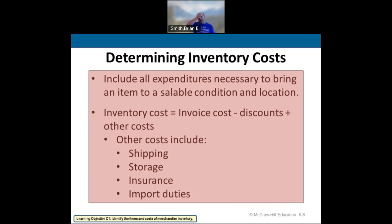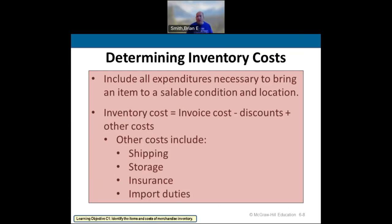For example, if you were to buy parts for a bicycle — as a manufacturer, not a merchandiser — the cost it took to build that bicycle would also be inventory. But that's manufacturing. We're focused on merchandisers right now, and we'll get into manufacturing costs in accounting 212.